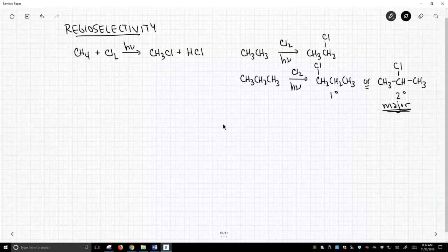So why is that? This is an example of regioselectivity. Some of these C-H's in this molecule are more reactive than others. The reaction occurs on one region of the molecule in preference to others. It preferentially gives a secondary halide. So why is this?